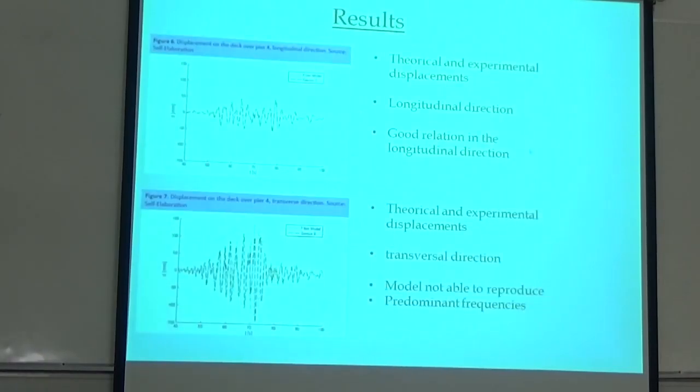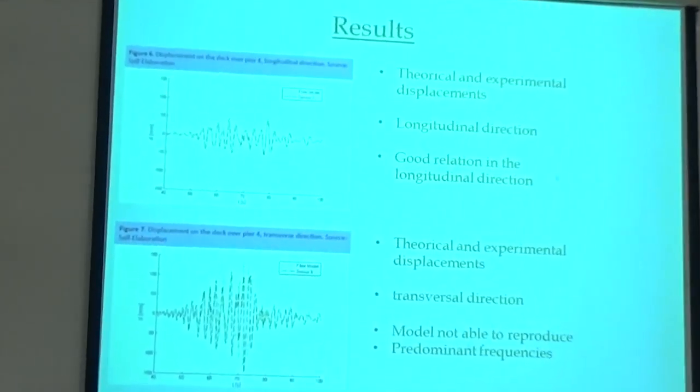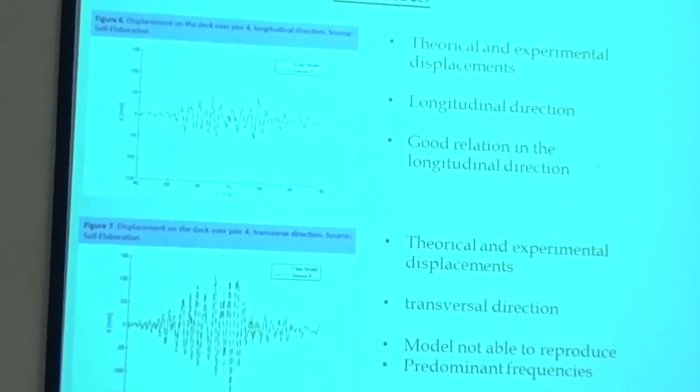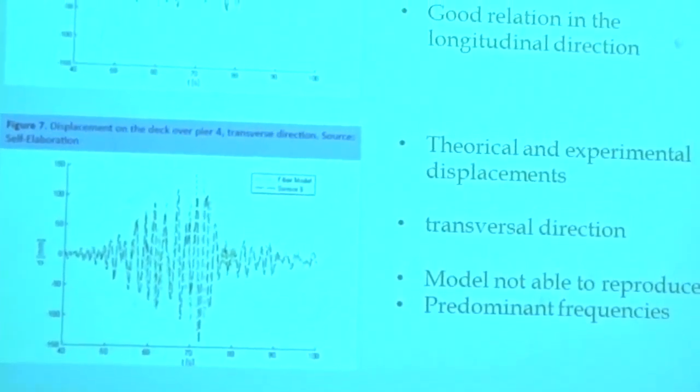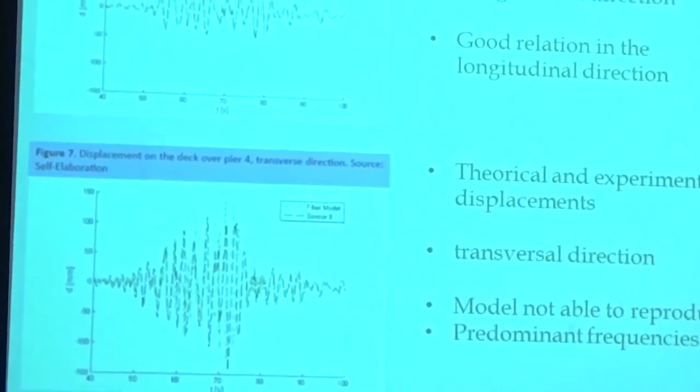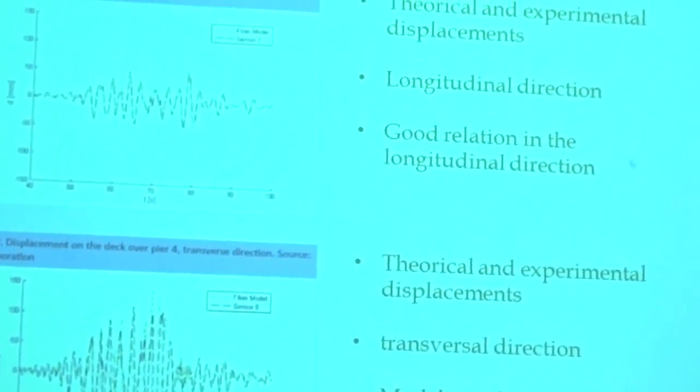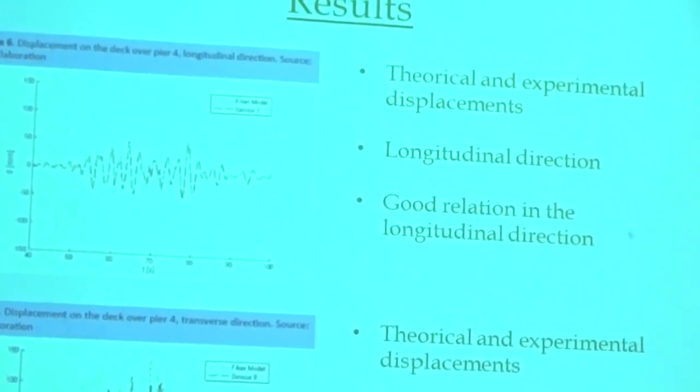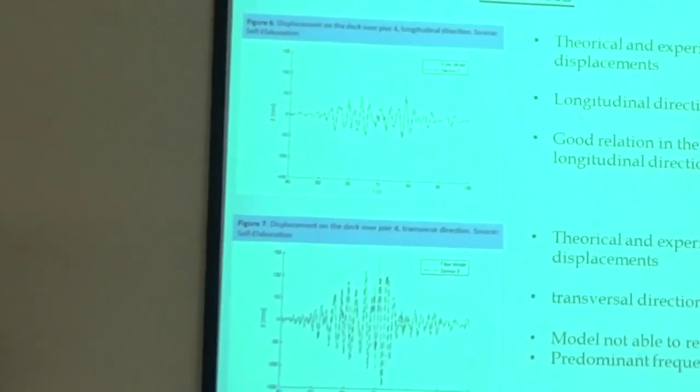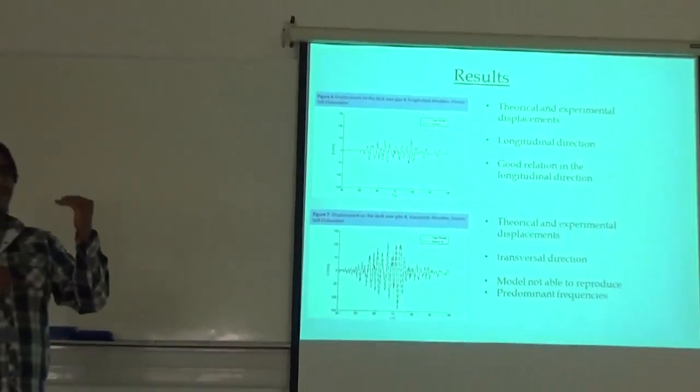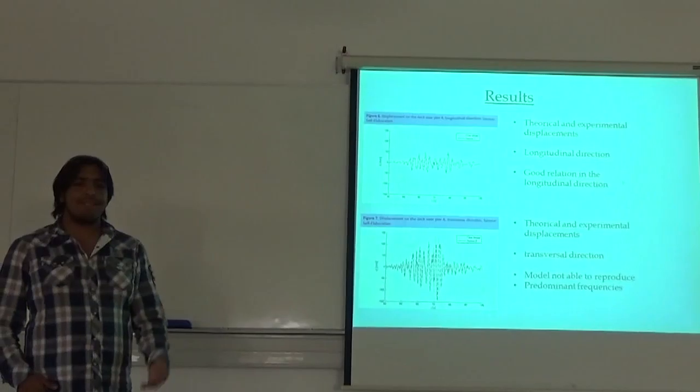Here are the results. There's good news in the longitudinal direction because there are good relations between the theoretical and experimental displacement. But there's bad news in the transversal direction because the model is not able to reproduce the predominant frequency. I mean the higher and smaller frequencies. This is all.